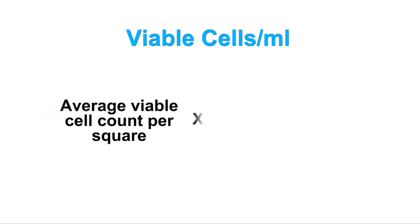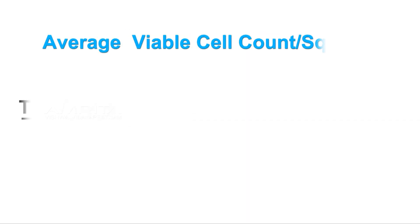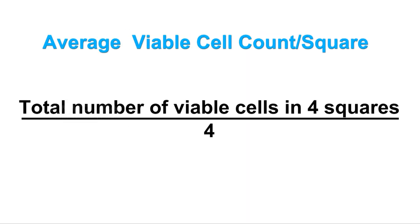Viable cells per milliliter is average viable cell count per square times dilution factor times 10 to the power of 4. Average viable cell count per square equals total number of viable cells in 4 squares divided by 4.